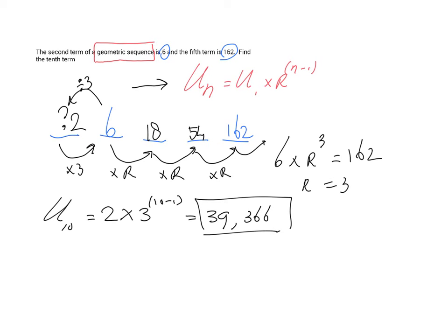That's your final answer. There were different ways of doing it. By the way, this formula is on your formula sheet — you do not have to remember it by heart. But if you have a blackout and you don't know what r and u1 mean: from term 5, you just multiply by 3 six more times to reach u10, and you'll get 39,366 too.